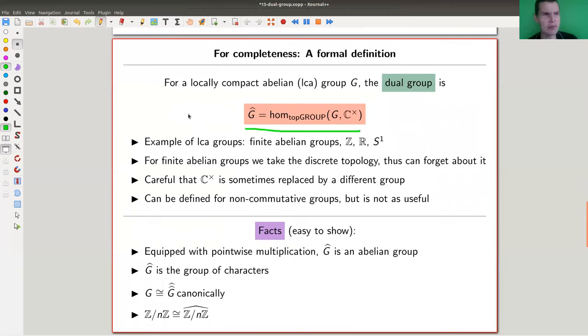For some historical reasons, the dual group gets a hat symbol instead of a star symbol like the dual vector space. Anyway, so the dual group is defined as all homomorphisms from the group to the complex numbers. You don't want to hit zero, so you take out zero, but otherwise just to the complex numbers. It's stated here a little bit more general than I actually needed. So you can make this for a reasonably locally compact abelian group, and then you need some topology and some continuity assumptions. You can ignore that for the finite abelian groups that I have in mind. But if you like those locally compact abelian groups, here are some further examples of those.